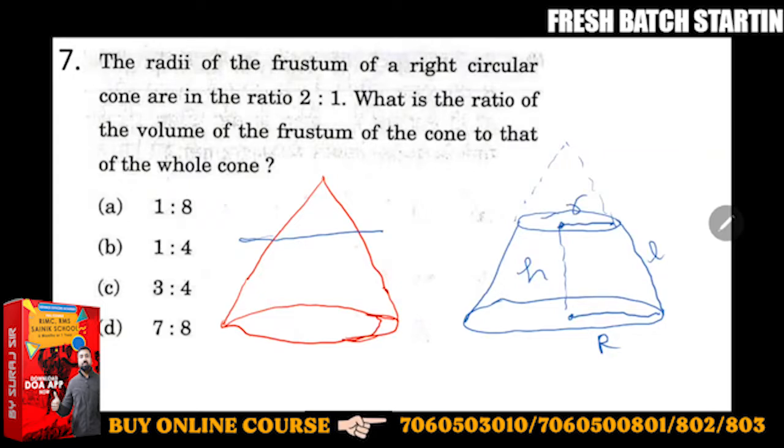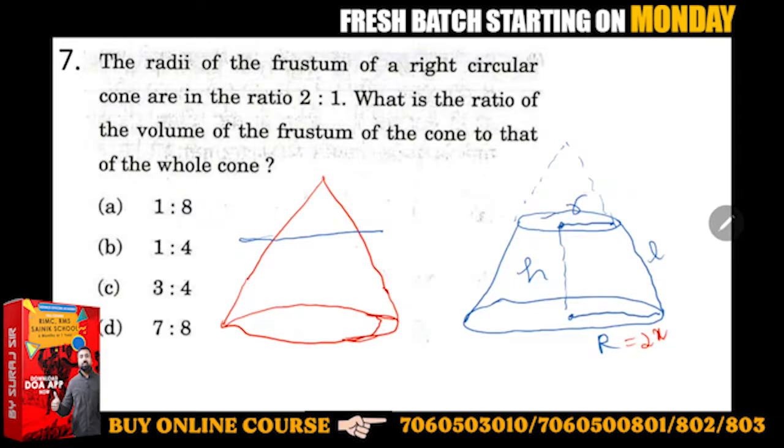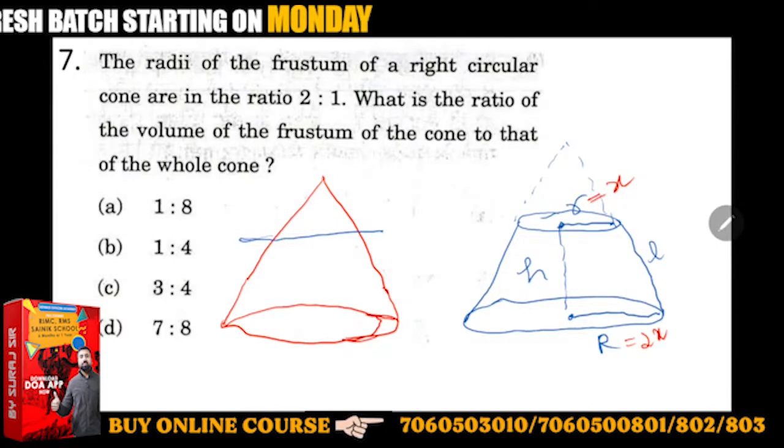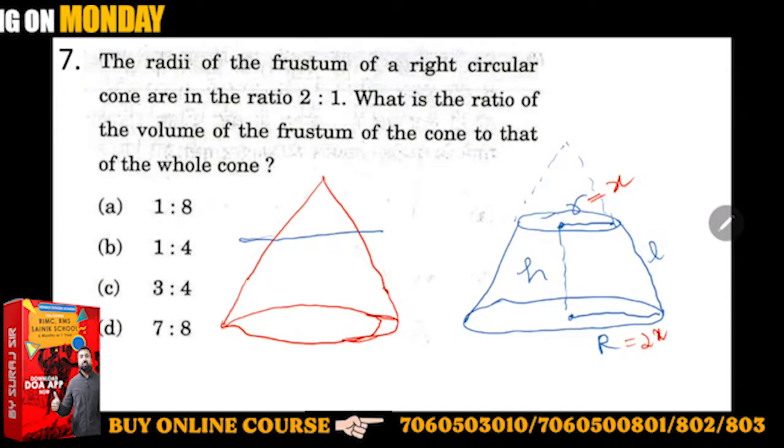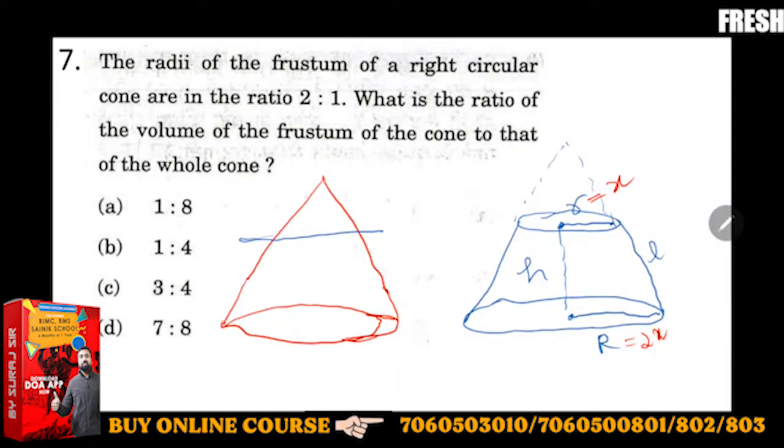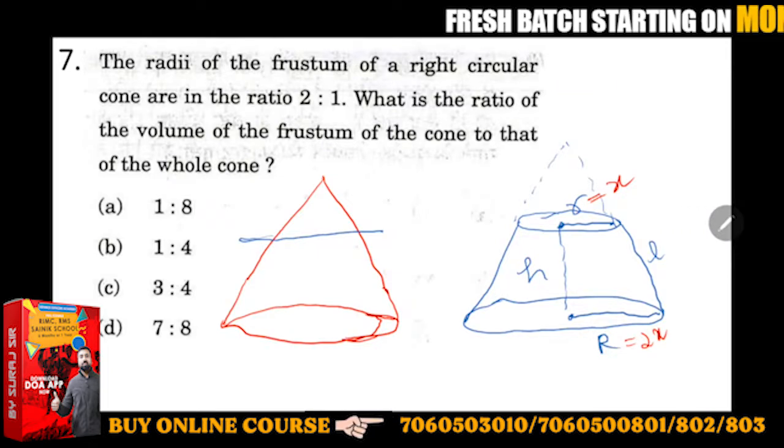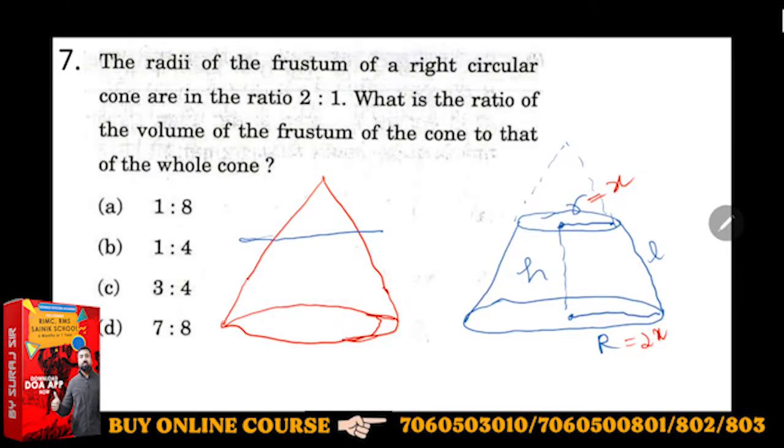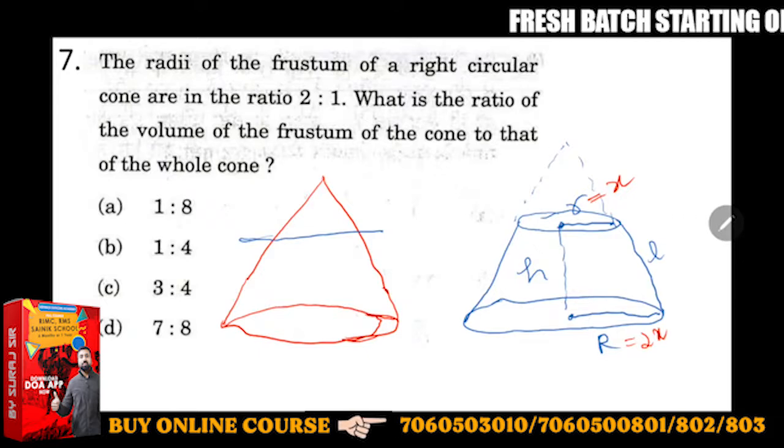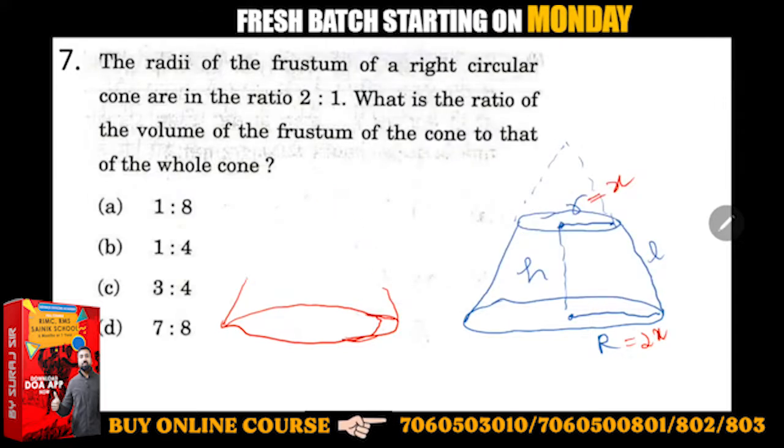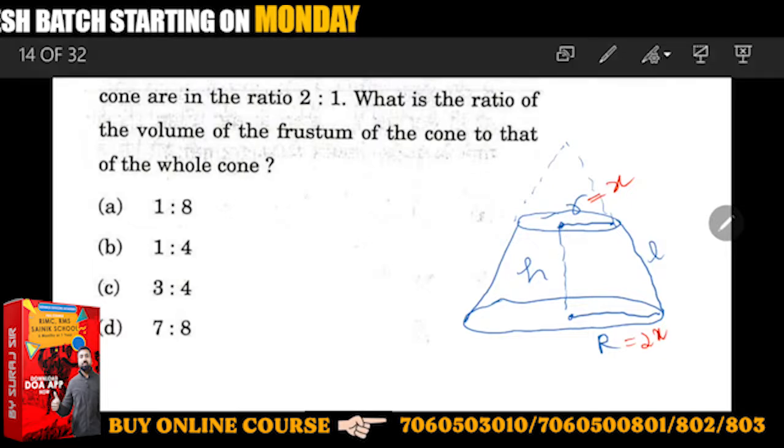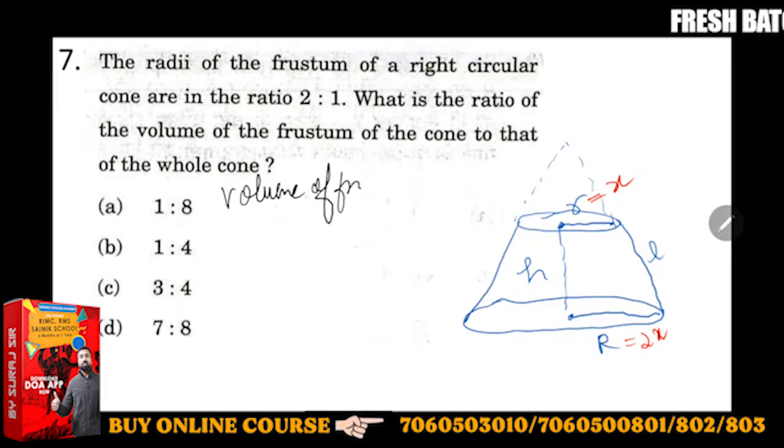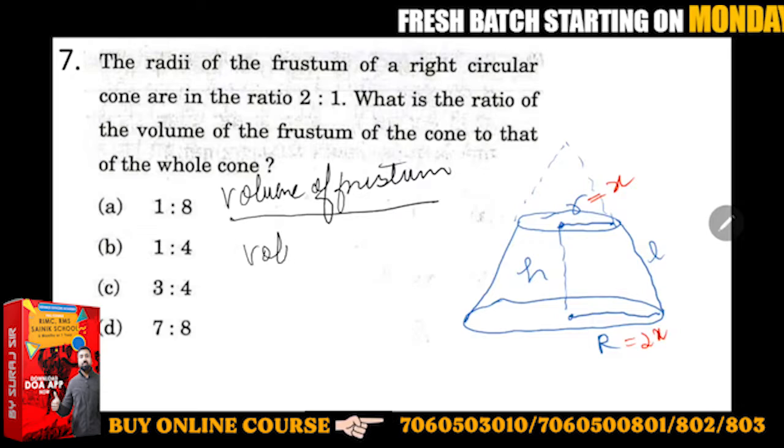The radius of the frustum is in ratio 2:1, so we can write radius as 2x and x using a common multiple. What is the ratio of the volume of the frustum to that of the whole cone? Very good, Mandip Chatterjee. So you have to calculate volume of frustum upon volume of cone.